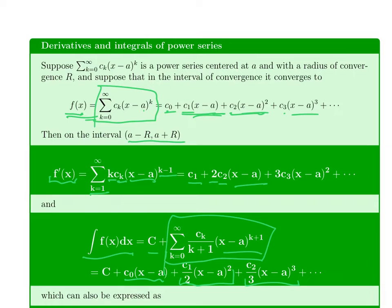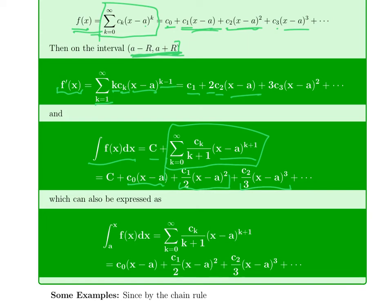These power series converge in essentially the same place f does. They will converge on the open interval. Sometimes if f converged including an endpoint, f prime won't, or the integral of f won't — or maybe the integral of f will. So the endpoints can change in this process, but the radius never changes. You can rewrite the integral expression as a definite integral from a to x, and when you plug in x equals a, the constant disappears, giving a nice definite integral form.